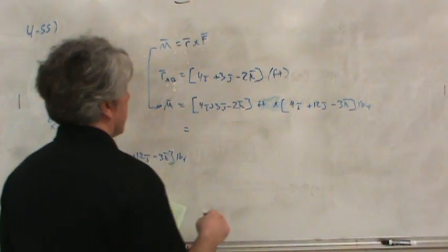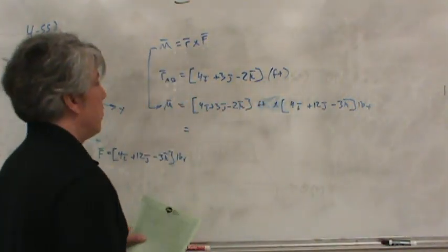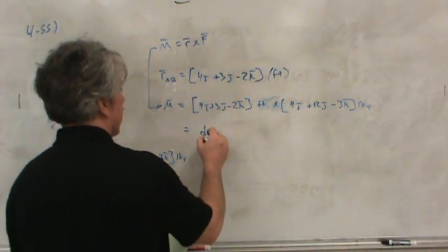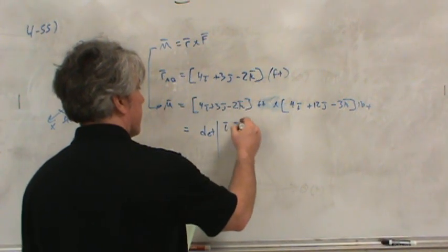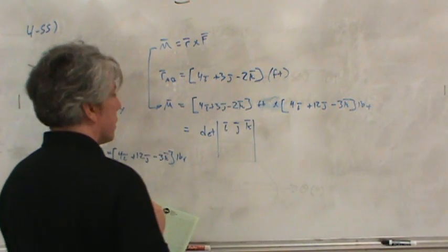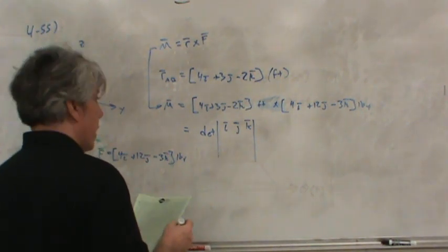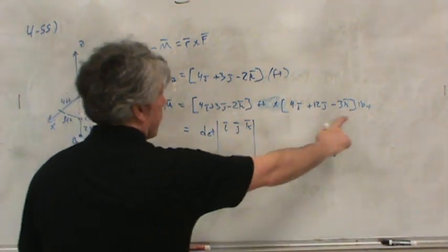Now to calculate the cross product, you can FOIL it and consider, you know, i cross i, i cross j, i cross k. But it's a little more compact to think about it as the determinant of a matrix, not like the movie The Matrix. Where you put i, j, and k in the first row. And then the components of each vector in the second and third row respectively.